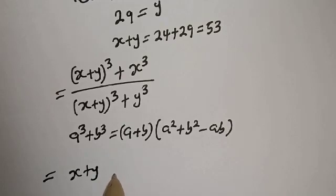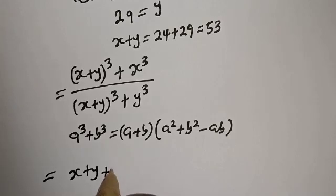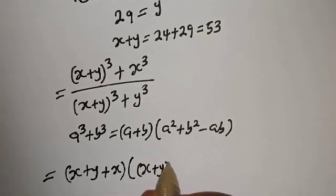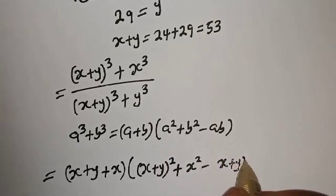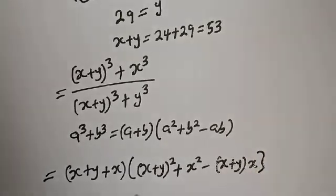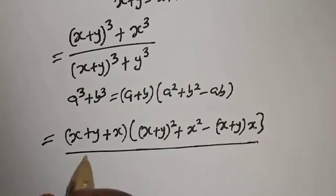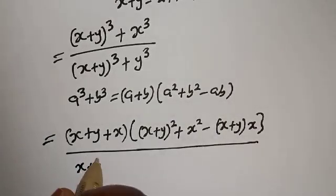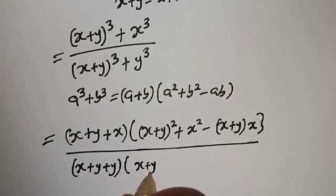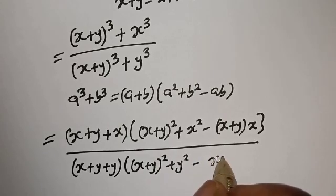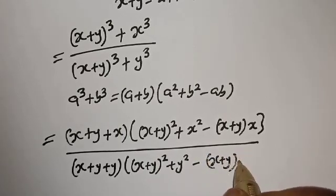The numerator becomes: s plus y plus s, bracket, s plus y squared plus s squared, minus s plus y multiplied by s. The denominator becomes: s plus y plus y, bracket, s plus y squared plus y squared, minus s plus y multiplied by y.